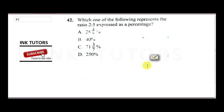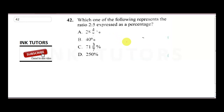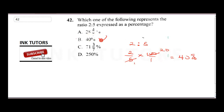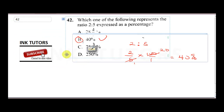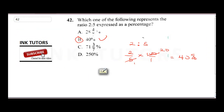Question 42: Which of the following represents the ratio 2:5 expressed as a percentage? Simply calculate 2 over 5 times 100, giving 40%. The correct answer is B. Thank you for staying with us — please subscribe and click the notification bell for more updates.